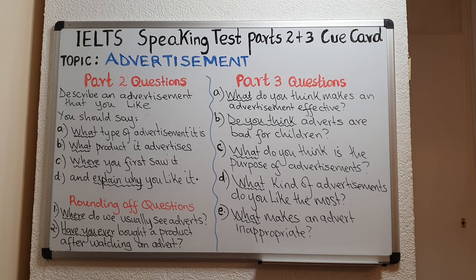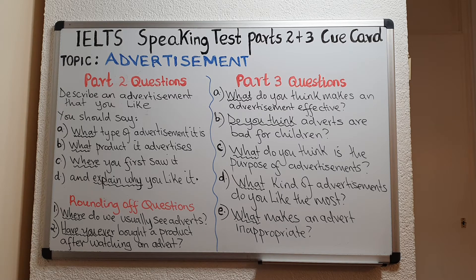Let's move on to B — what product it advertises. In this question the examiner wants to know what product the advert you've identified actually advertises. You can answer this question by saying: it advertises unlimited internet connection everywhere for a very low price.